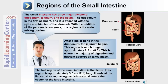The jejunum and ileum make up the majority of the length of the small intestine. The ileum is approximately 3.5 meters or 12 feet long, and it ends at the ileocecal valve, through which material enters the cecum of the large intestine.